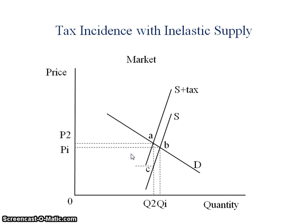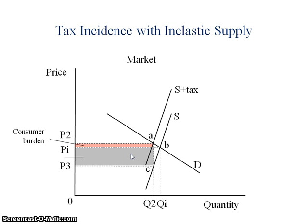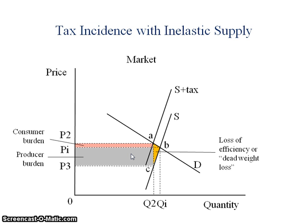Then I have to figure out the price that the producer gets to keep. In this particular case, it looks like it is going to be the consumer that gets off with the lighter tax burden, and it's going to be the producer that bears the brunt of this particular tax. This is because the producer cannot make any supply changes as a result of the imposition of the tax, so he's stuck with bearing most of the burden of that taxation. We still have some degree of inefficiency — deadweight loss to society — indicated in orange.